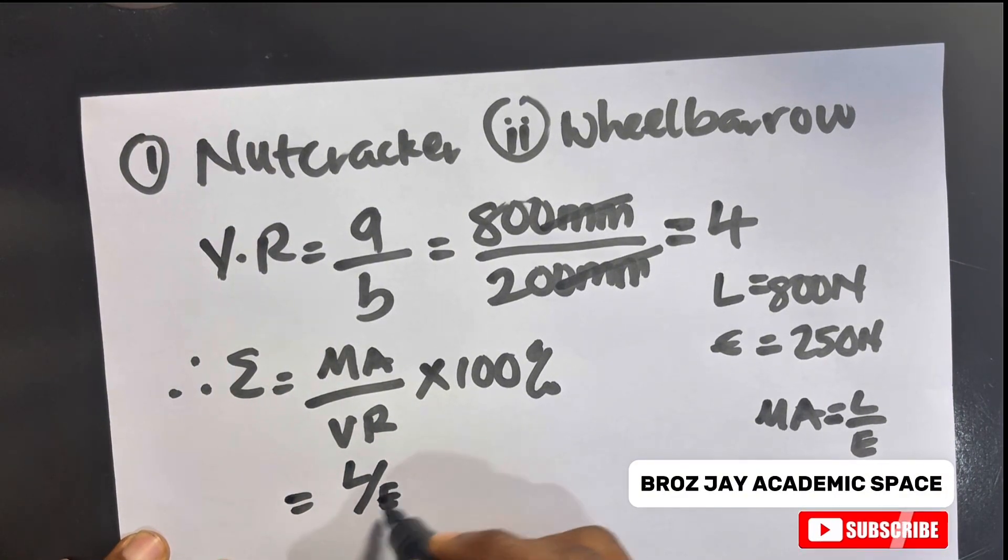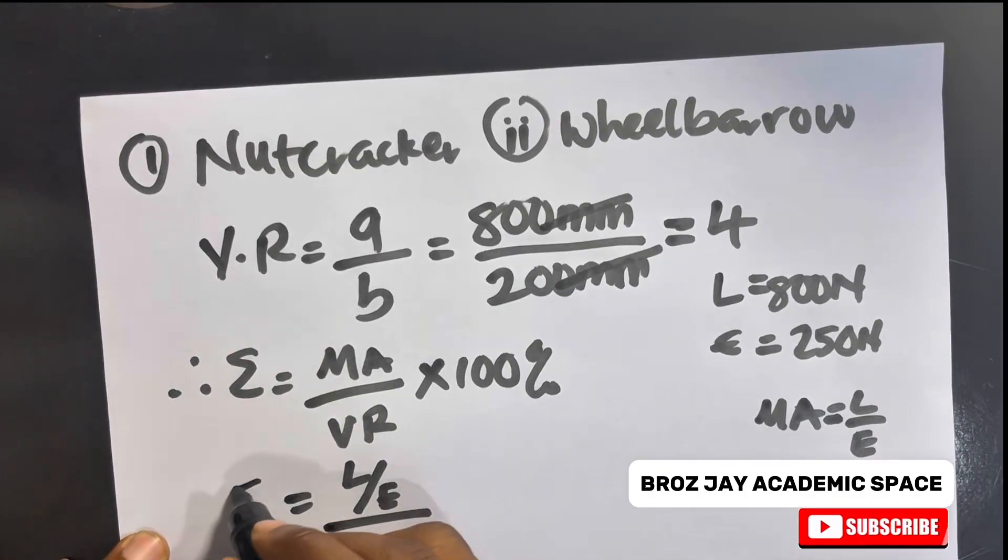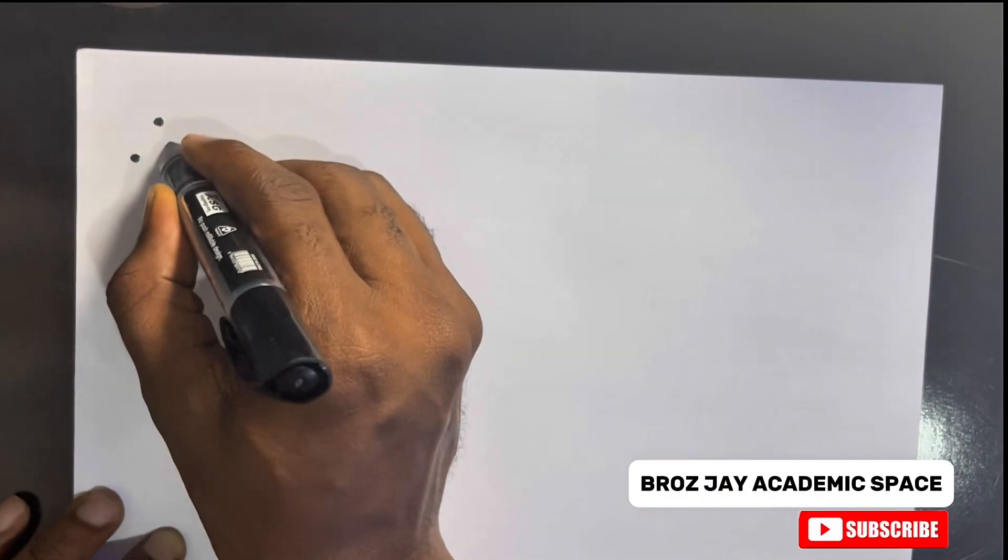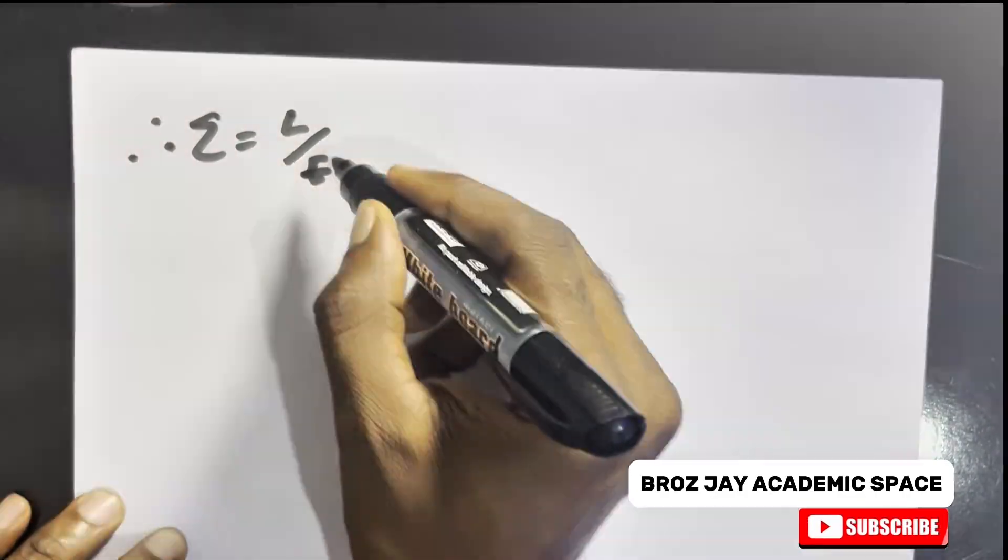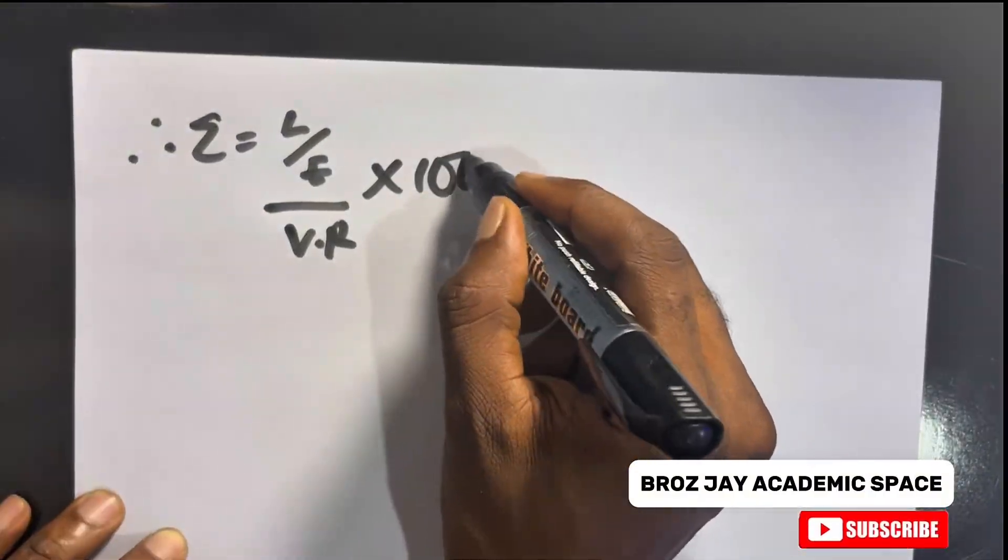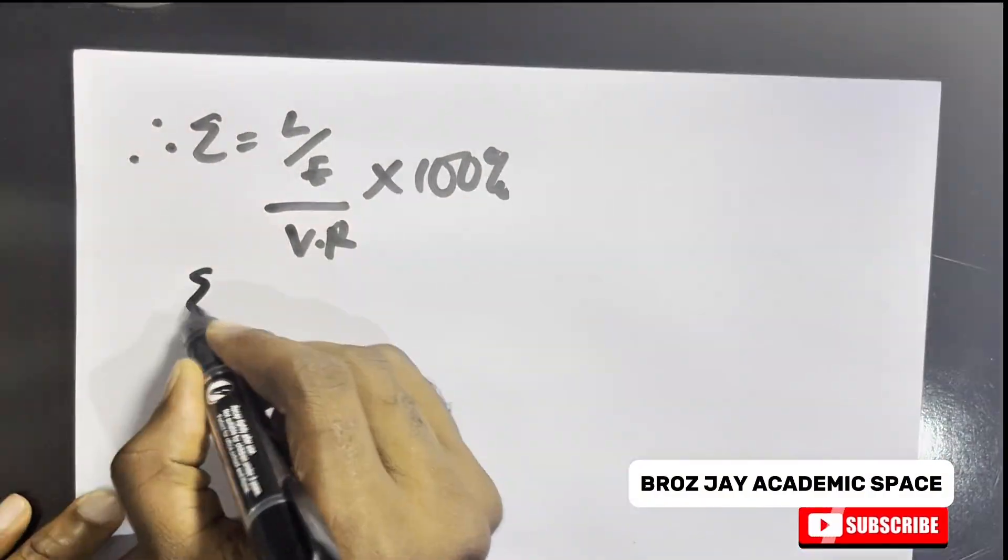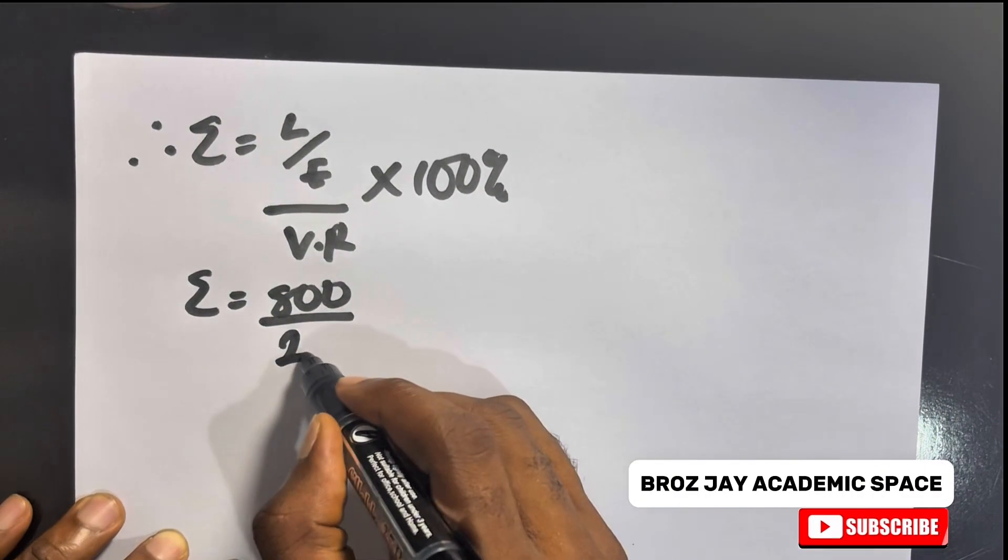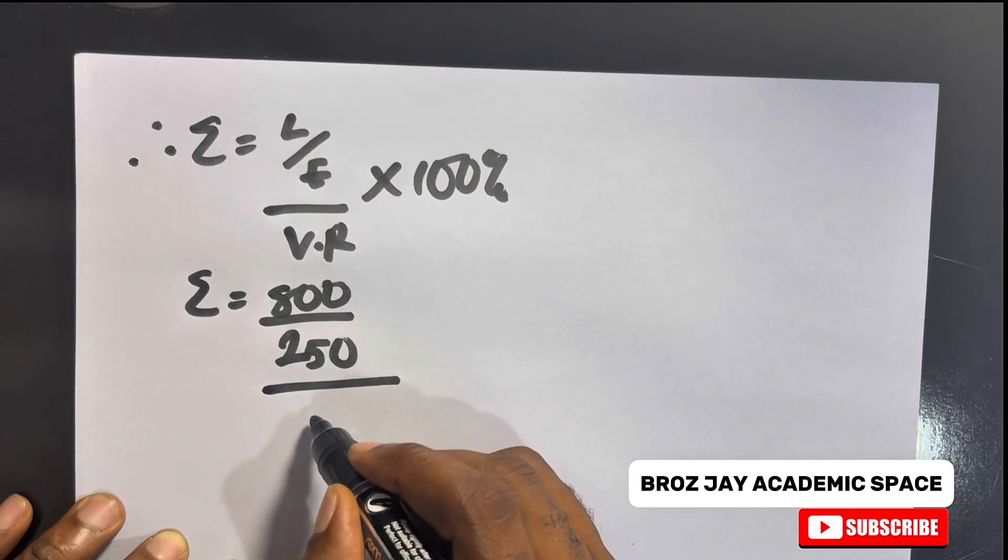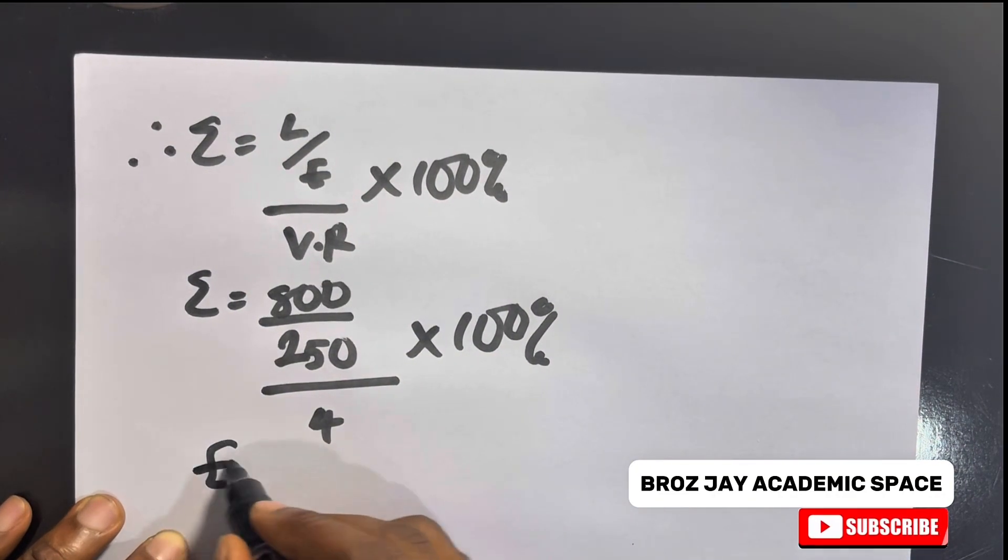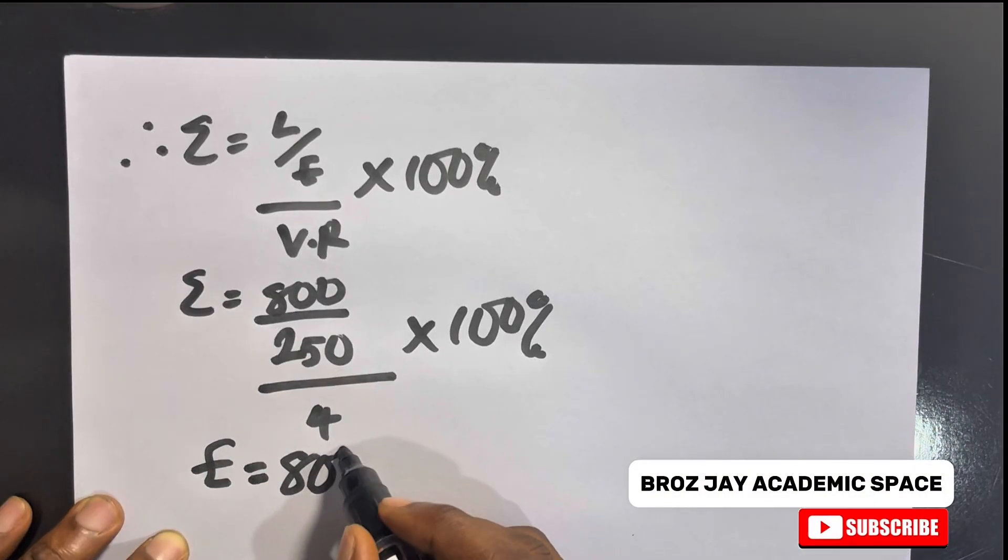Where we have mechanical advantage here, we replace it and substitute it to be L over E divided by VR times 100%. My efficiency equals L over E over VR times 100%, so my L is 800 divided by 250 divided by 4 times 100%, which gives 80% as my final answer.